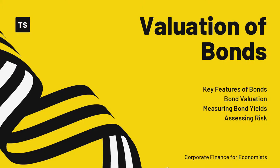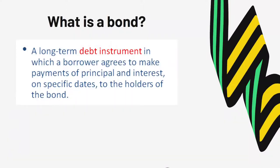Lecture number seven: variations of bond. In these chapters we're going to learn about the key characteristics of bond, bond variations, and how to apply present value formulas and present value of annuity formulas in bond variation formulas. We can flip the equations to find the bond yields or yield to maturity. In the last section we'll learn about relevant risk in bond investment.